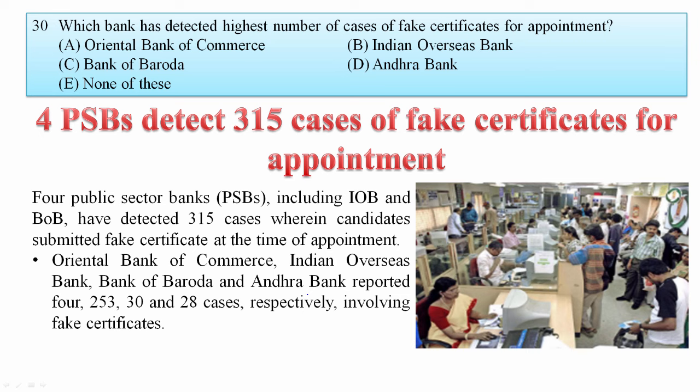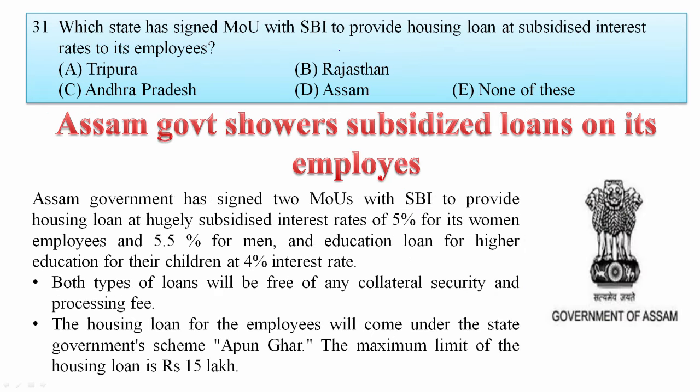Now let's see trade and banking news. Which bank has detected the highest number of cases of fake certificates for appointments? Four public sector banks including IOB and BOB detected 315 cases where candidates submitted fake certificates at the time of appointment. Oriental Bank of Commerce, Indian Overseas Bank, Bank of Baroda, and Andhra Bank reported 4, 253, 30, and 28 cases respectively. The list is topped by Indian Overseas Bank. Your answer is B.